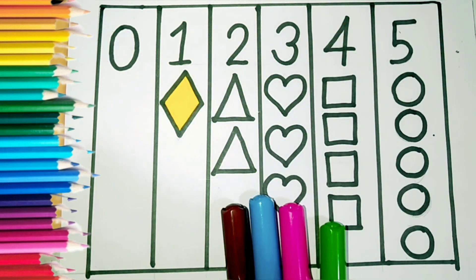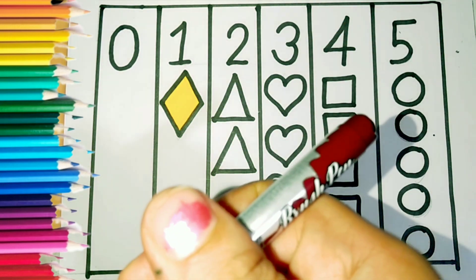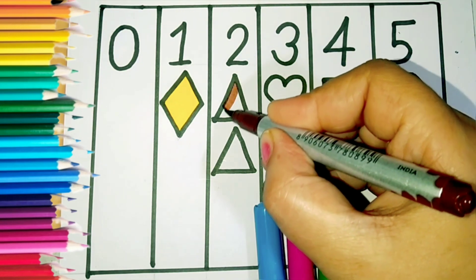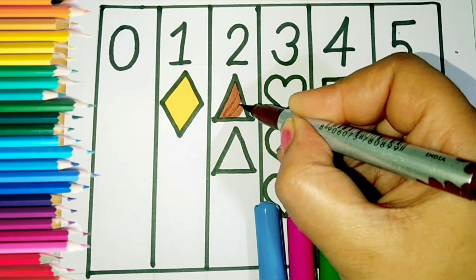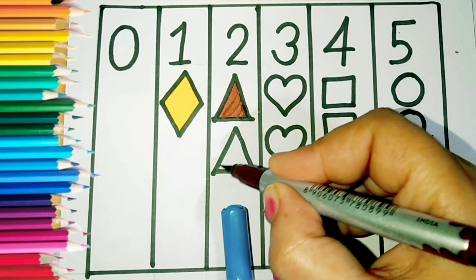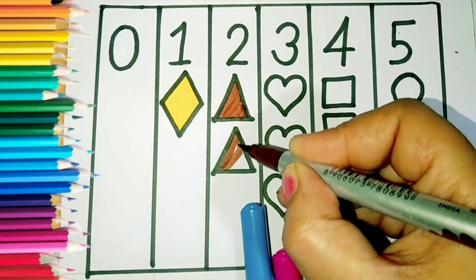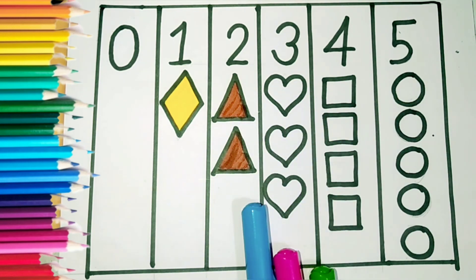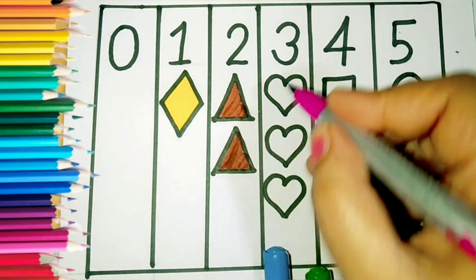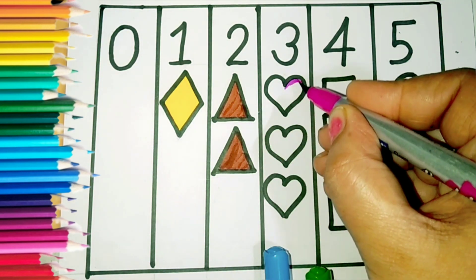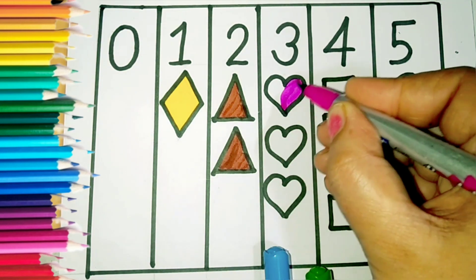It is a brown color. Brown. We have two triangles of brown color. Now this is a heart, pink color.